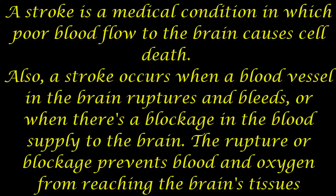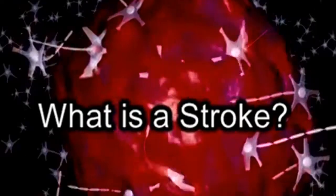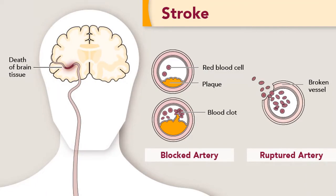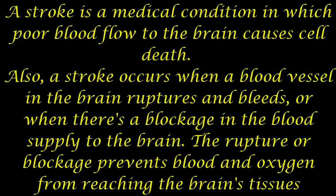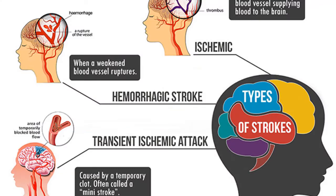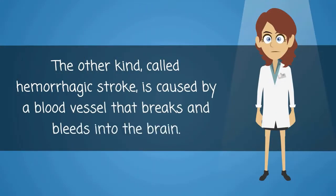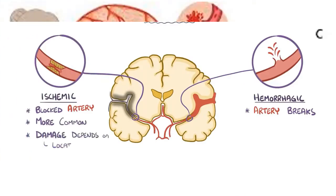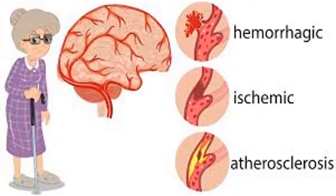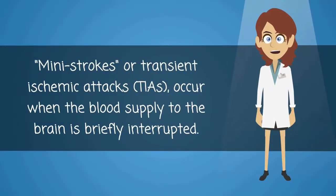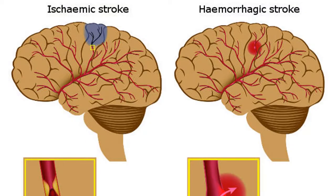What is a stroke? A stroke is a condition in which poor blood flow to the brain causes cell death. It occurs when a blood vessel in the brain ruptures and bleeds, or when there is a blockage in the blood supply to the brain, preventing blood from reaching the brain's tissues. There are two main types: an ischemic stroke, caused by a blocked artery reducing blood flow to the brain, and a hemorrhagic stroke, when an artery in the brain bleeds, creating a pool of blood that damages the brain. Ischemic strokes are much more common. If symptoms self-resolve within 24 hours, it is called a transient ischemic attack, usually with minimal long-term problems.